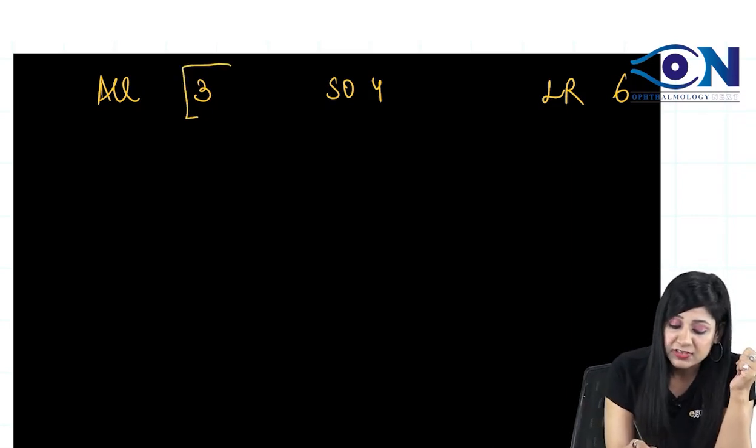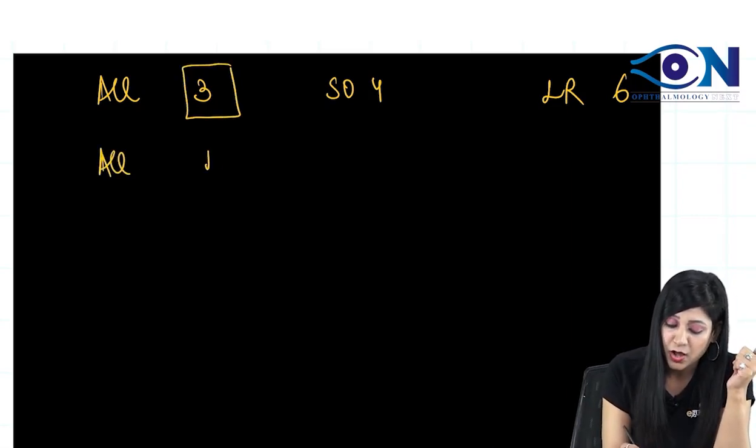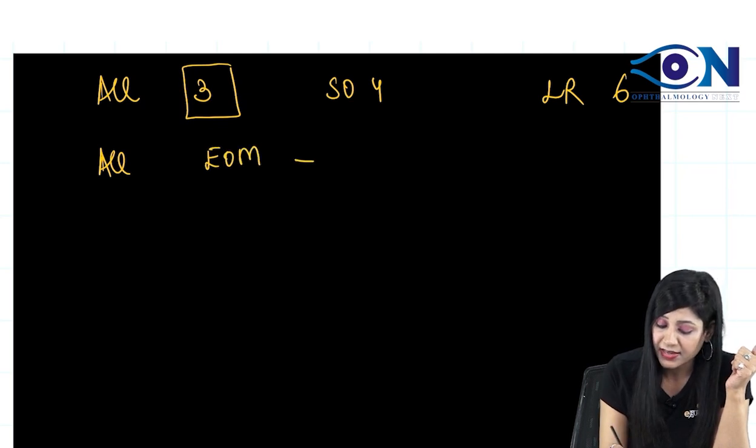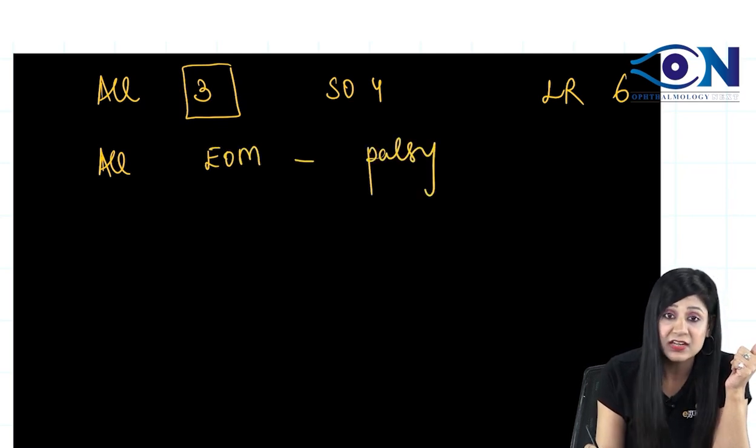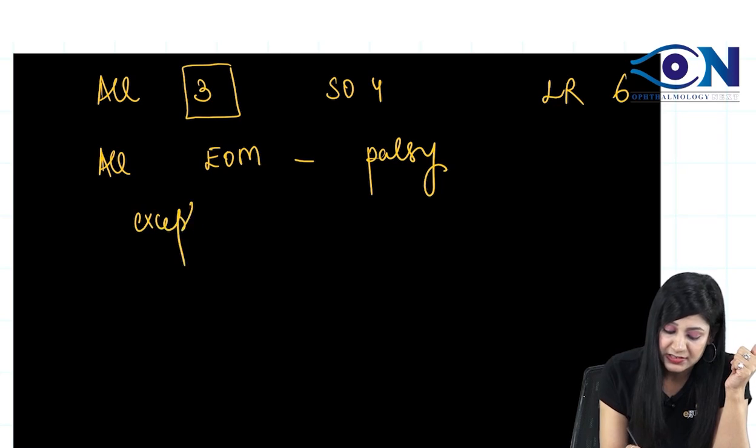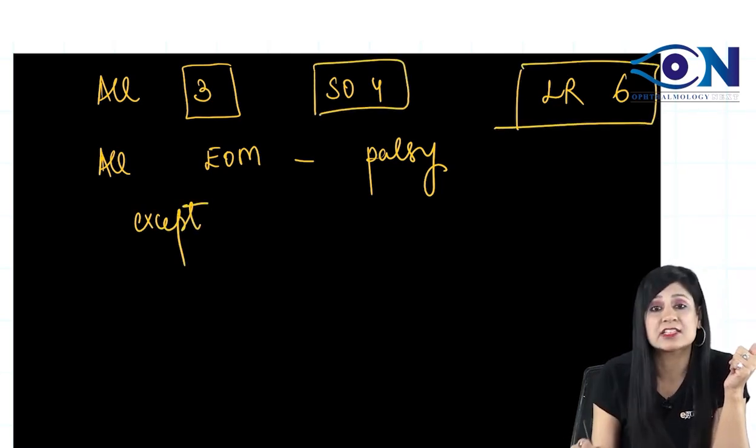So if I am getting this third nerve palsy, all extraocular muscles will get paralyzed, except which two muscles? Except for this SO4 and the LR6.